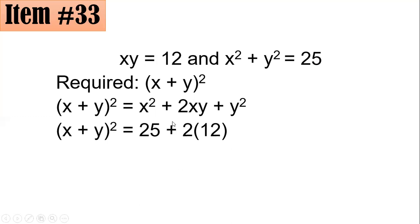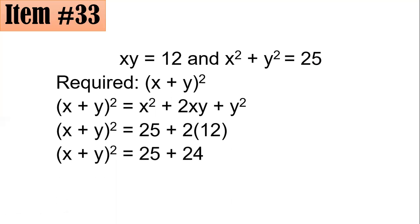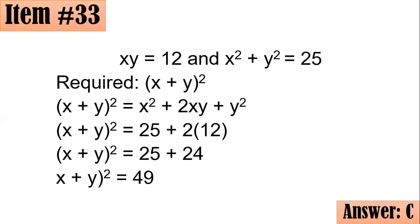We still have 2xy, and since xy equals 12, we have 2 times 12 equals 24. So we have 25 plus 24, and hence (x plus y) squared equals 25 plus 24, which is 49 — that is letter C.